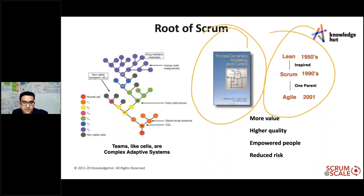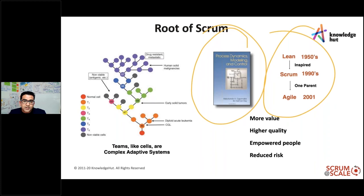Teams are like cells — people, teams, organizations are like complex adaptive systems. The Scrum definition talks about complex adaptive systems that change through small increments, accept change, accept feedback, improve the product, and release again. Release faster, get feedback, release again — that's the pattern. All these complex systems evolve through a series of stable states. Formalizing the Scrum process was based on empirical process design: transparency, inspection, and adaptation.